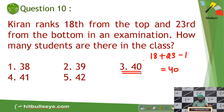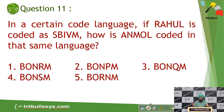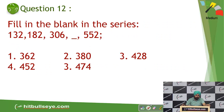Moving on — Rahul's code is given as SBIVM and you have to code UNMOLE in the same logic. If you see carefully, for R it is S, for A it is B — simply the next letter has been taken. Similarly for UNMOLE you can create the code. It's a very simple question you can solve on your own.